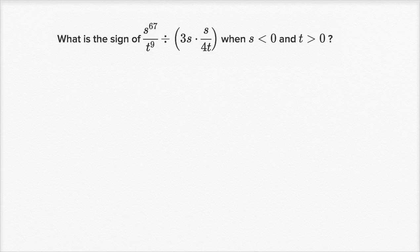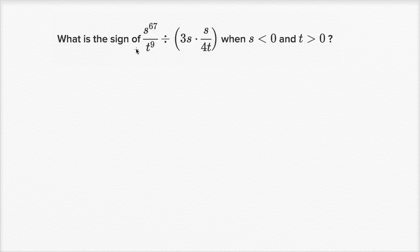Let's now do some examples that test our understanding of what happens when we multiply or divide a bunch of positive or negative numbers together. Pause the video and see if you can work through it on your own before I do it. First question: what is the sign of s to the 67th power divided by t to the ninth power, divided by the expression 3s times s over 4t, when s is less than zero and t is greater than zero?